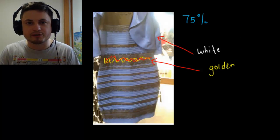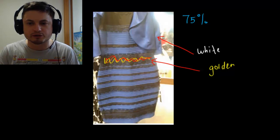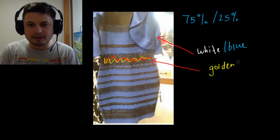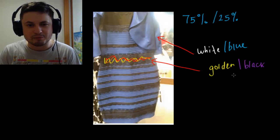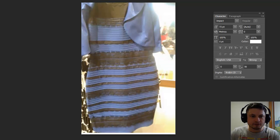Now here's what happened to those 75% of us afterwards: in a few minutes or even seconds, we actually changed our perception and saw the real colors of the dress, which is what the other 25% saw in the beginning — blue and black stripes. The original color of the dress, which is probably the most sold dress on the internet right now, is actually blue and black. I'll show it to you in Photoshop.